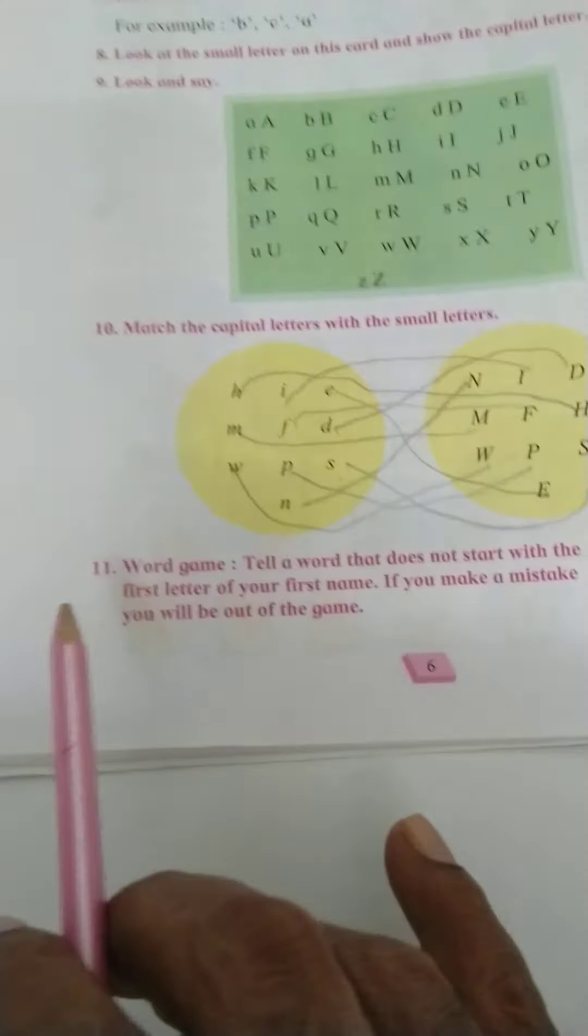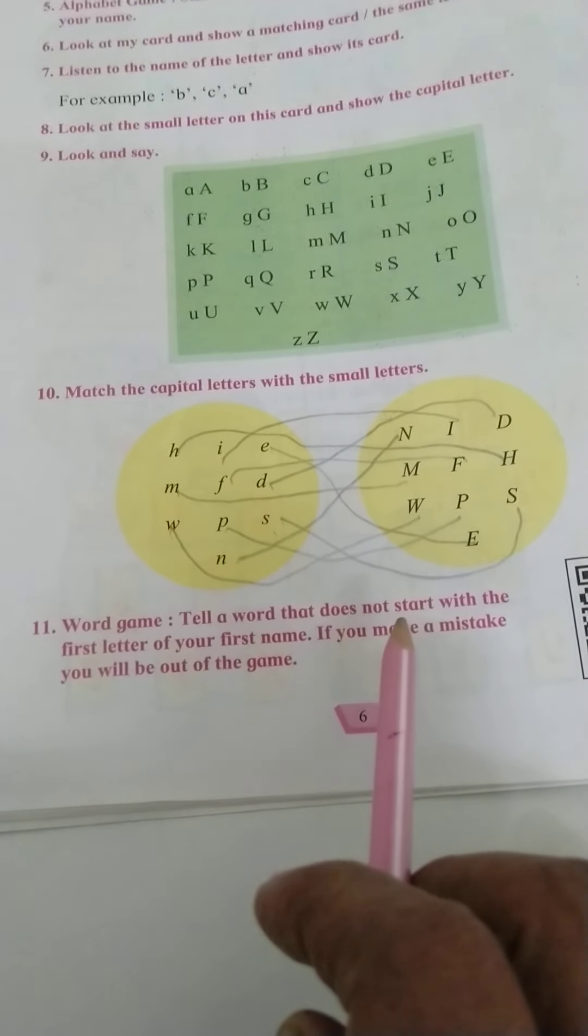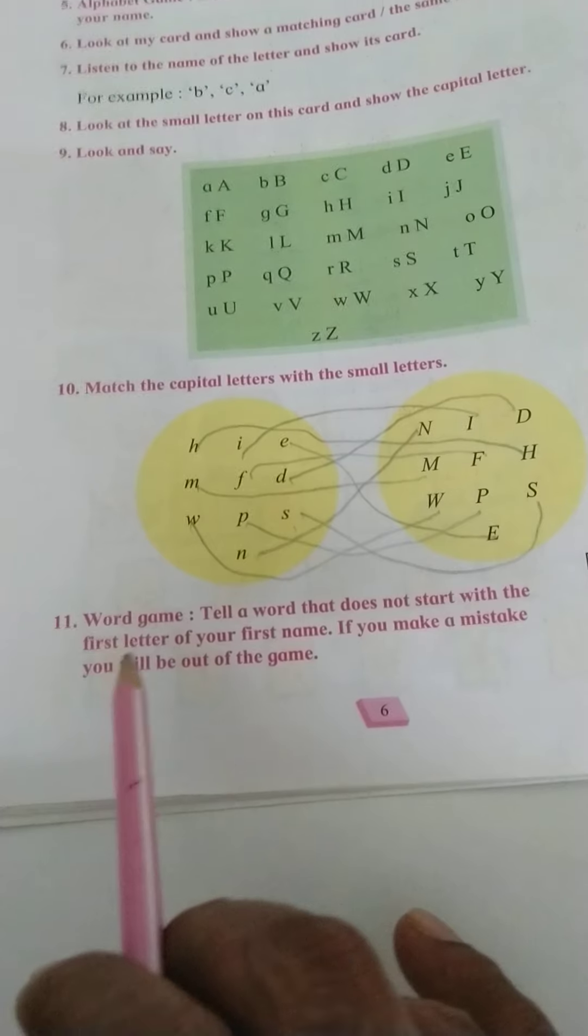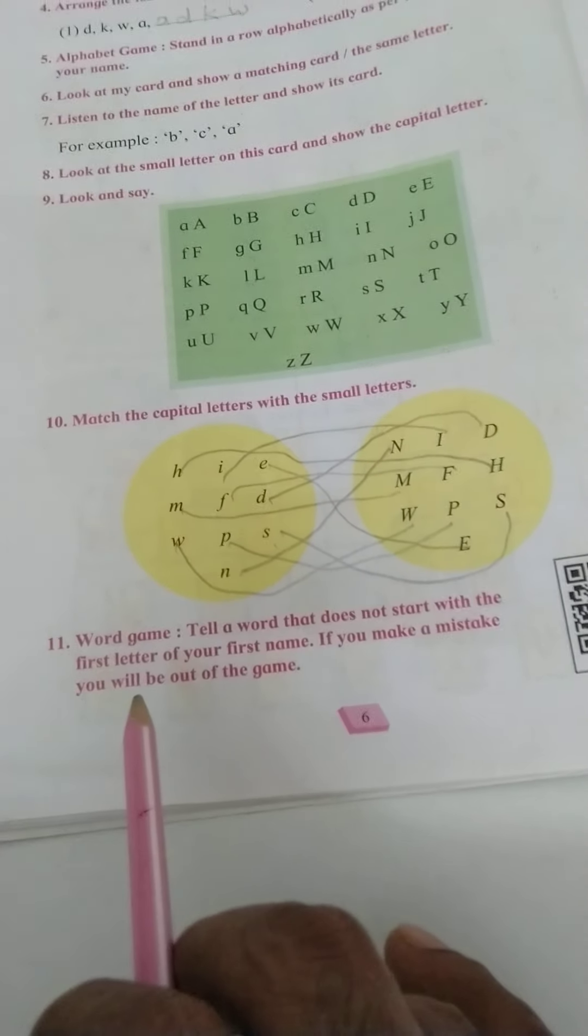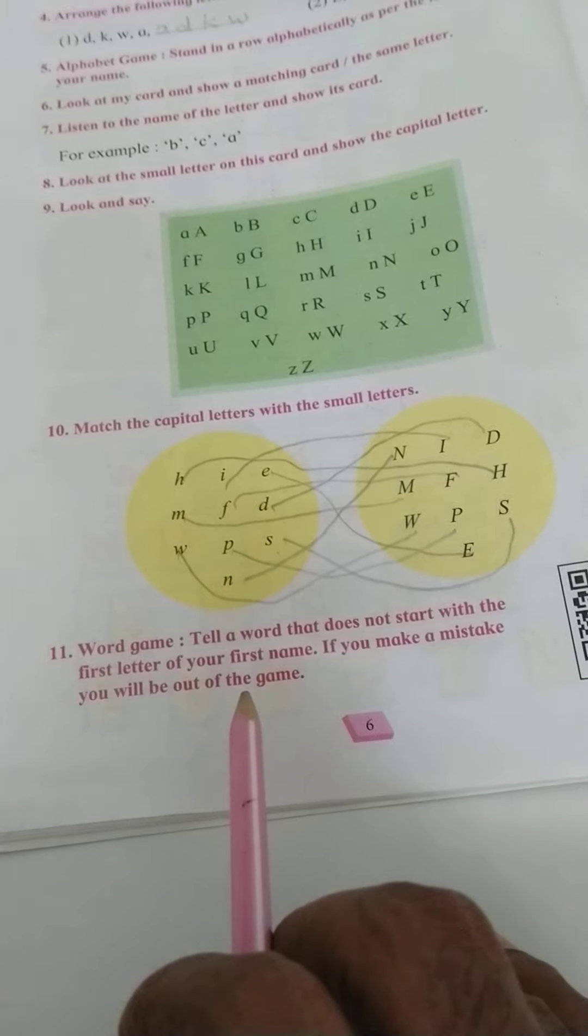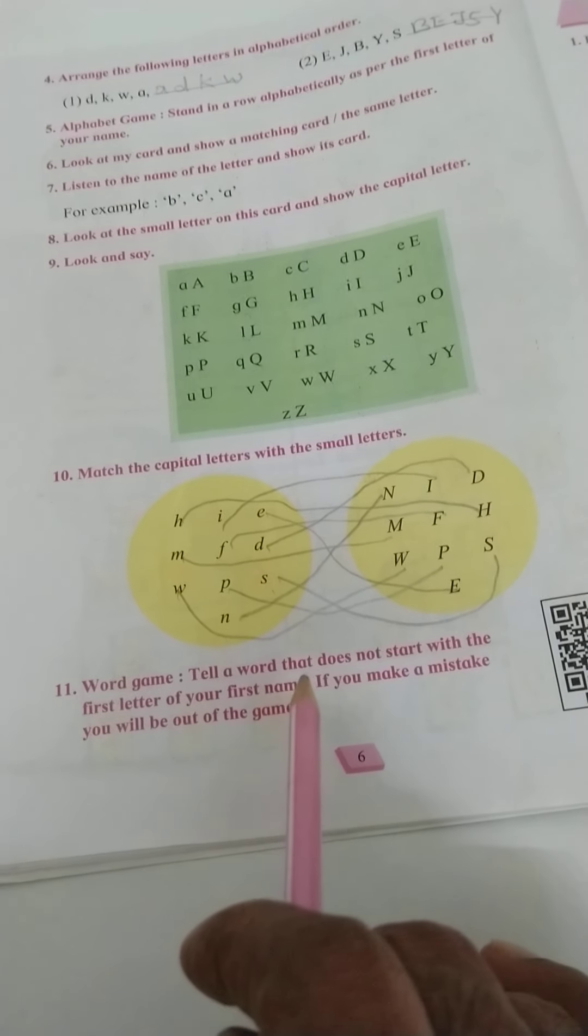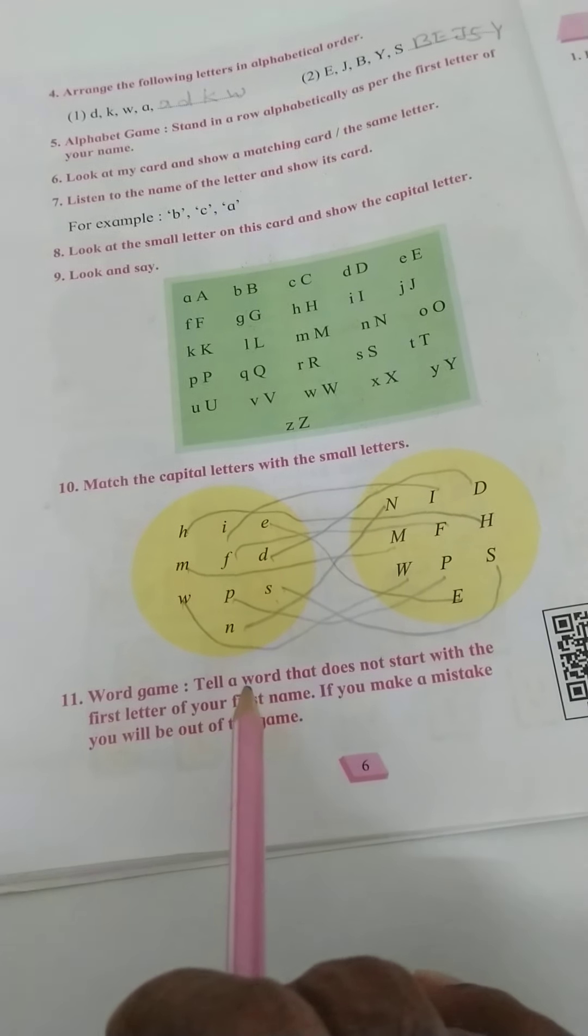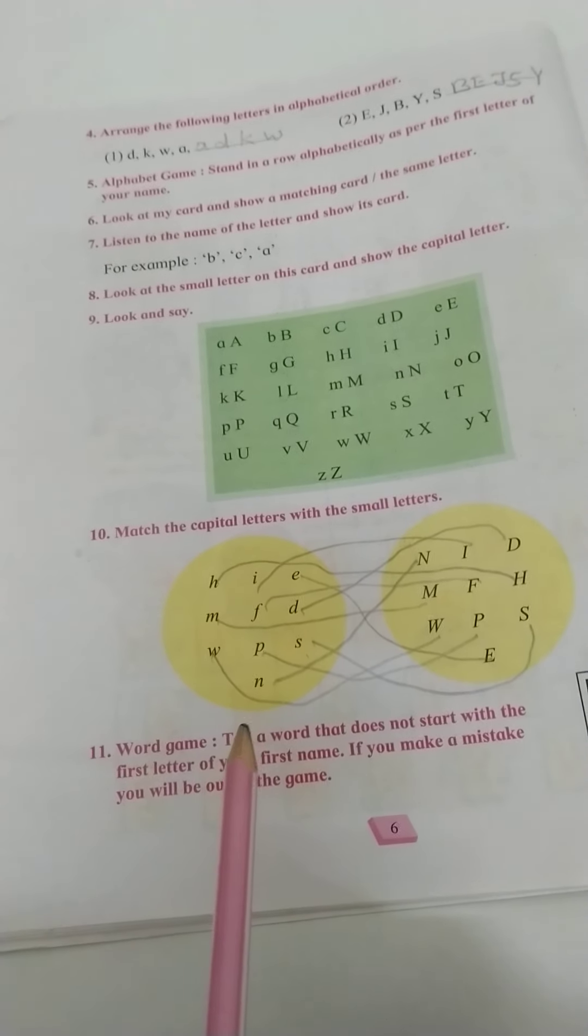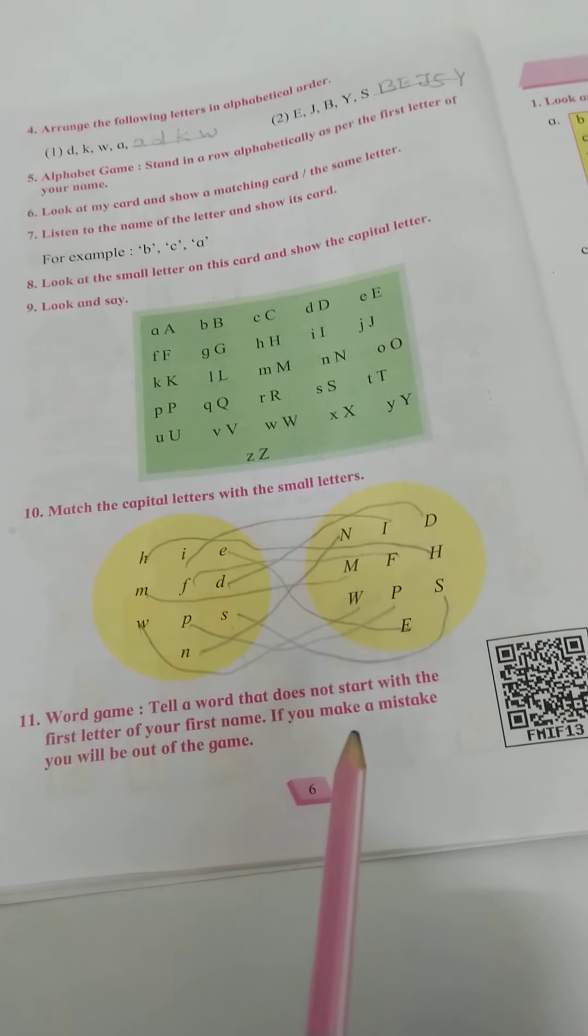Here, now point number 11, word game: tell a word that does not start with the first letter of your first name. If you make a mistake, you will be out of the game. What to do? You have to say the word which does not start with your first name letter. In this way, when it will be not, then you will be out of game.